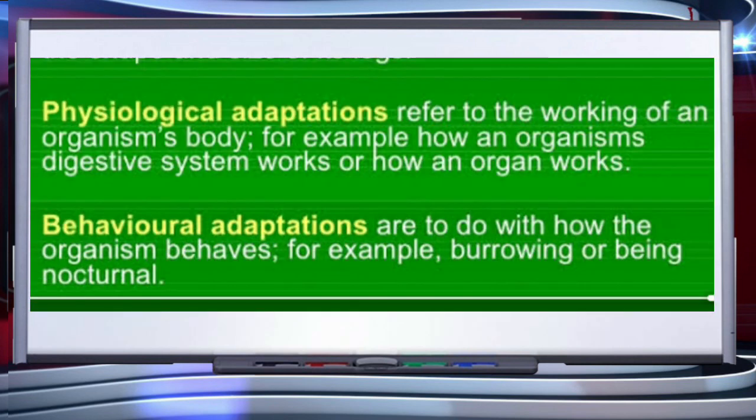The second type of adaptation is physiological adaptation. It is an internal body process to regulate and maintain homeostasis for an organism to survive in the environment in which it exists. For example, temperature regulation, release of toxins, and release of antifreeze proteins.